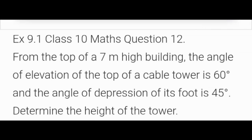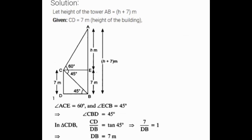I hope you all know the meaning of angle of elevation and angle of depression. Let's consider the height of the tower AB as h plus 7 meters. From the picture we have two triangles: triangle ACE and triangle CDB, in which the whole AB is h plus 7 meters, AE equals h meters, and BE equals 7 meters. Angle ACE equals 60 degrees, angle ECB equals 45 degrees, angle CBD equals 45 degrees, and CD equals 7 meters.